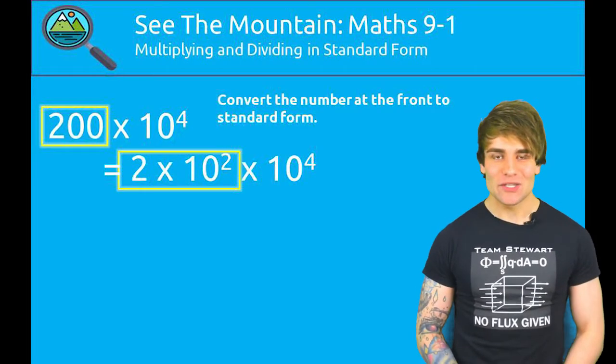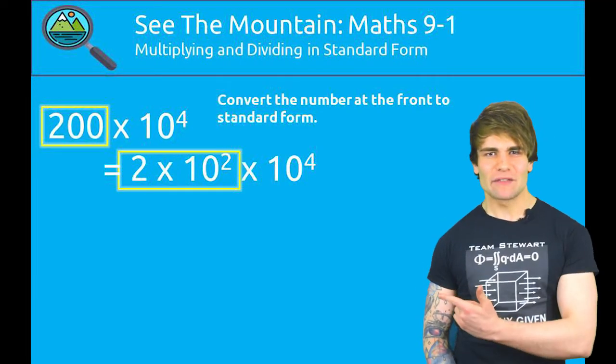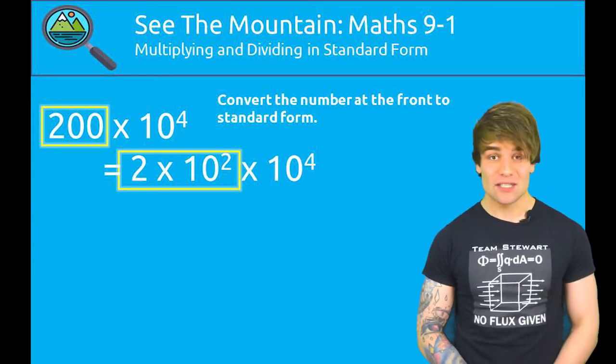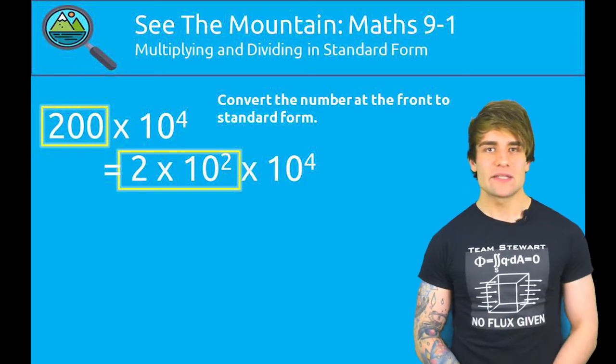So we've got 200 times 10 to the 4. The surprising thing about this standard form is it's actually not standard. So to correct this, we can represent this as 2 times 10 to the 2, and then times 10 to the 4.